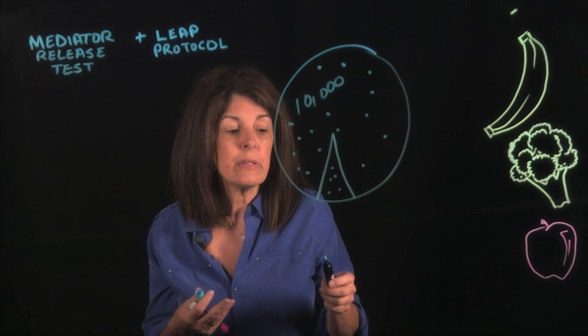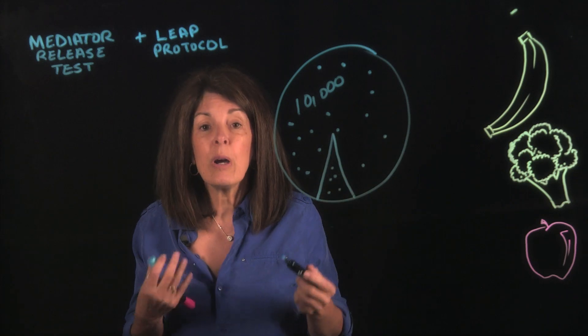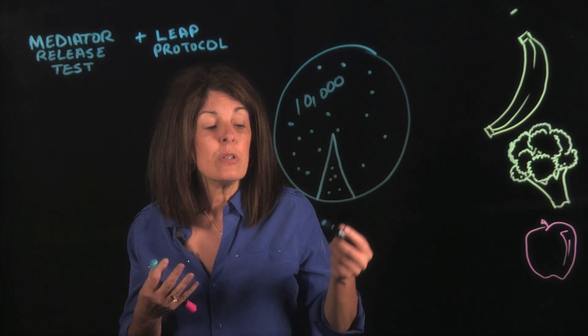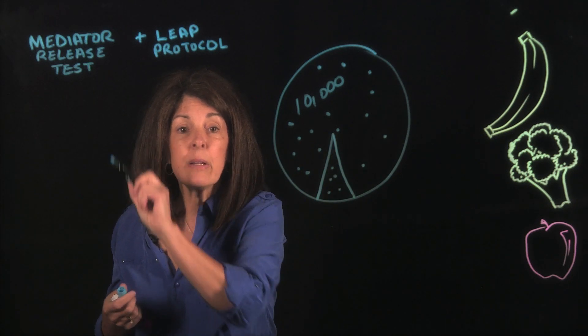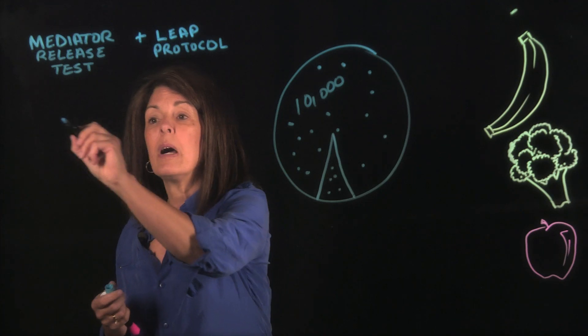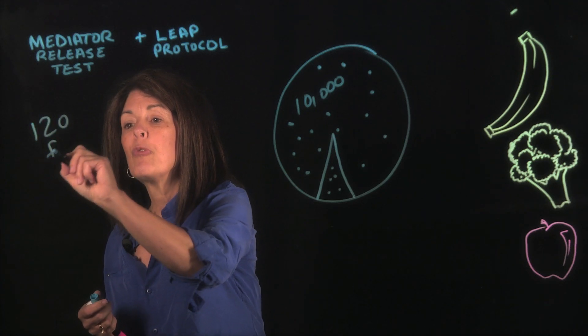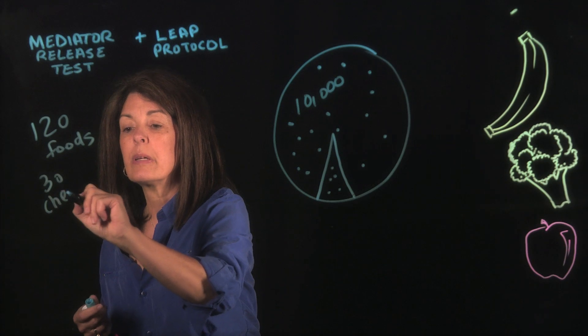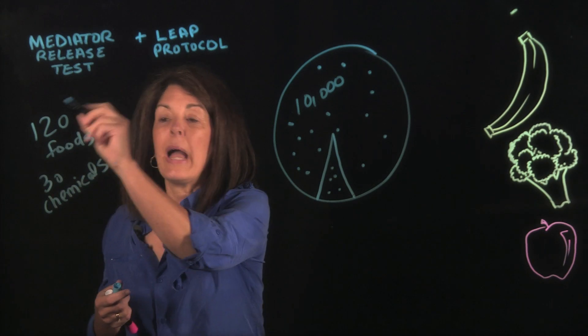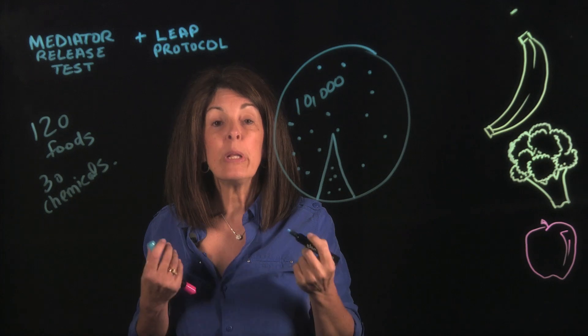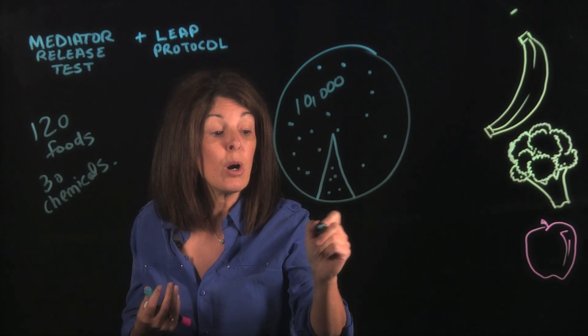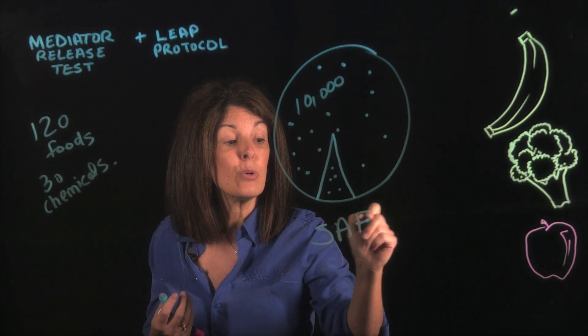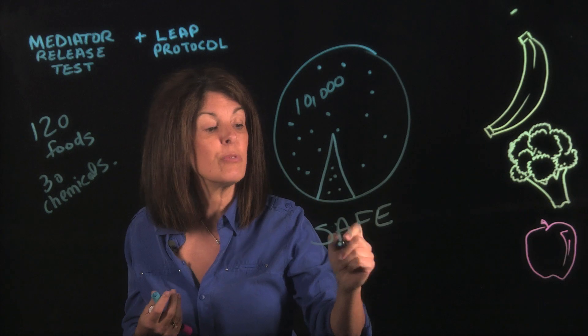And how we do it is we look to see what foods are safe. So the mediator release test looks at 120 foods and 30 chemicals because you can react to chemicals too. Out of those 120 foods, we look to see what foods are safe for you, what foods are non-reactive for you.